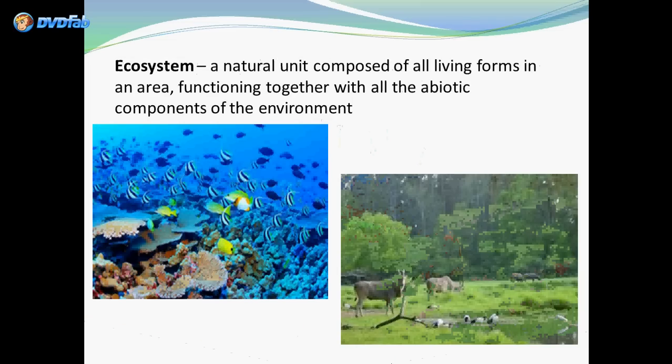An ecosystem is a natural unit composed of all living forms in an area, functioning together with all of the abiotic components of the environment. So ecosystems take into account both the living and the non-living factors of the environment.